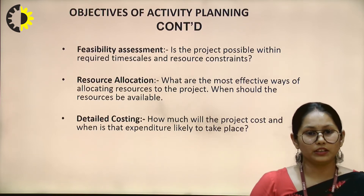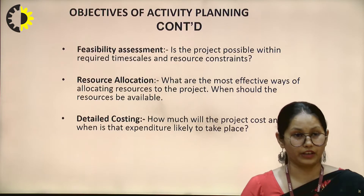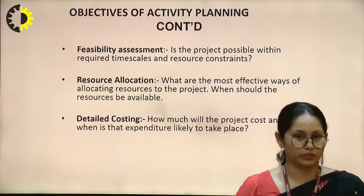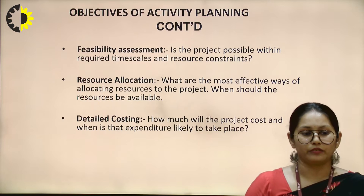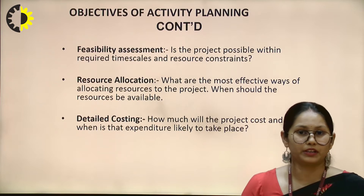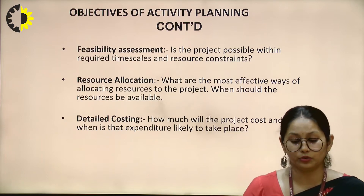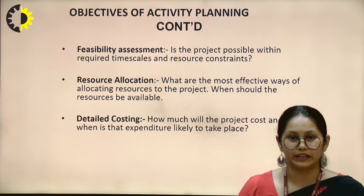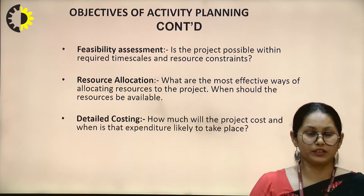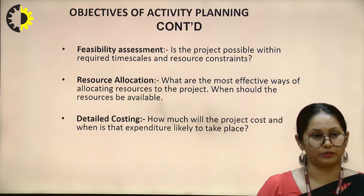The second objective is resource allocation — finding the most effective ways of allocating resources to the project. The question here is: when should resources be available to you? If you are implementing a project, you have to determine what programming language to use, what other parameters are needed, and what environment you are working in. You need to find out how to have those resources available before implementation begins.